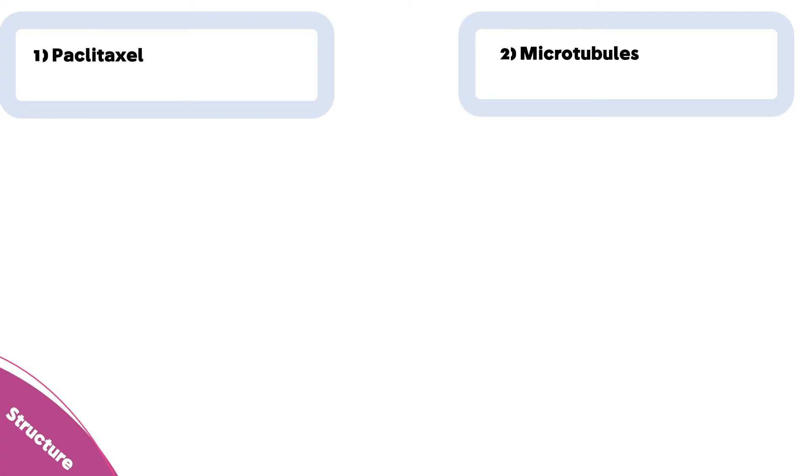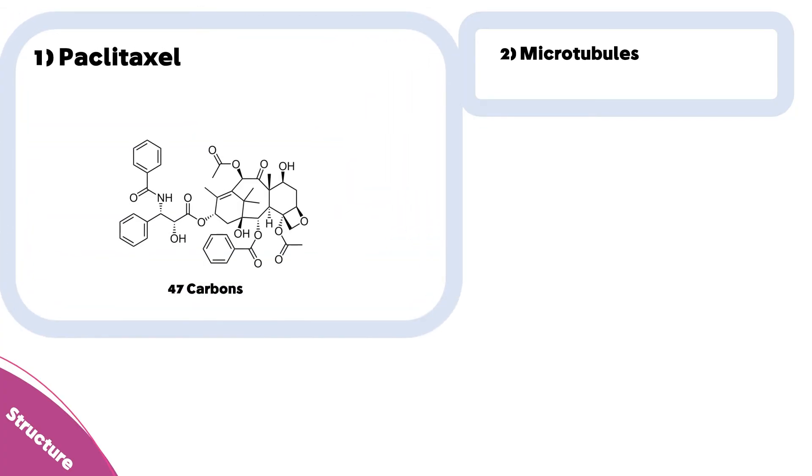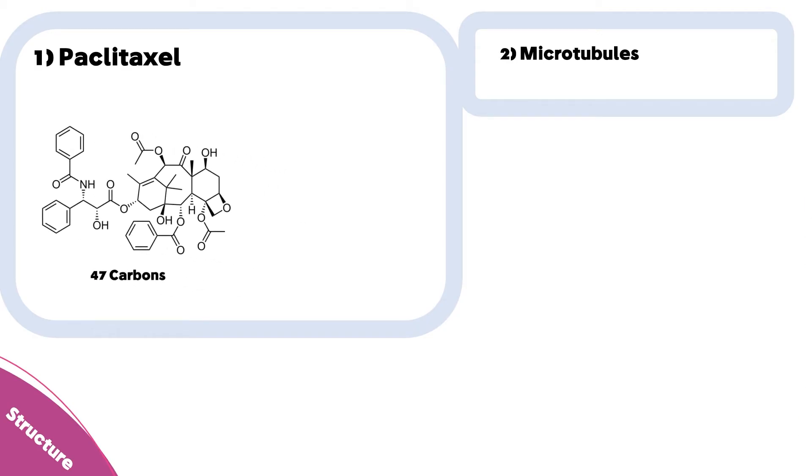We will give you the important details on paclitaxel and the microtubules that will help you understand any article. Paclitaxel is a huge compound with 47 carbons. It's so huge that the National Cancer Institute was unable to afford the expenses of its synthesis. For our drug designers, you can check the structure of the compound.